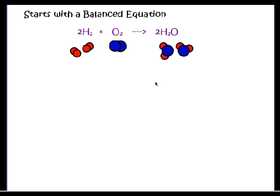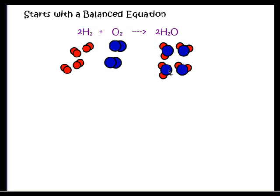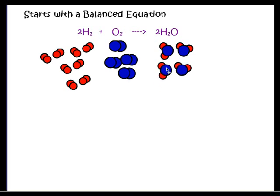But what if I need more than just two molecules of water? What if I started with four molecules of hydrogen — how much oxygen would I need? The ratio has to stay the same: two to one to two. So if I have four hydrogens, I'm going to need two oxygens, and I'll get four water molecules. And if I have eight molecules of hydrogen, I'm going to need four oxygens, giving me eight water molecules.